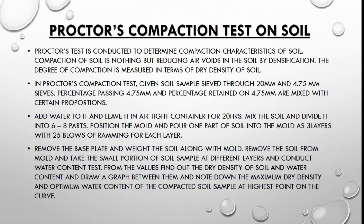Now moving toward Proctor's compaction test on soil. Proctor's test is conducted to determine the compaction characteristics of soil. Compaction of soil is reducing air voids in the soil by densification, and the degree of compaction is measured in terms of dry density of soil. In Proctor's compaction test, the given soil sample is sieved through 20 mm and 4.75 mm sieves. The percentage passing 4.75 mm and percentage retained on 4.75 mm are mixed in certain proportions. Add water and leave it in an airtight container for 20 hours. Mix the soil and divide it into 6 to 8 parts. Pour one part into the mold in 3 layers with 25 blows of ramming for each layer. Remove the base plate and weigh the soil along with the mold. Remove the soil from the mold and take small portions at different layers to conduct a water content test.